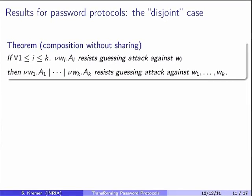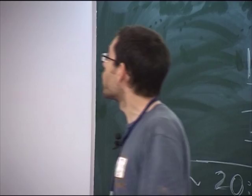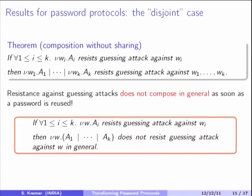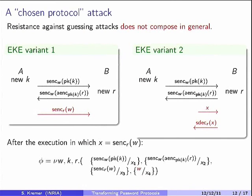If processes don't share anything and use different passwords wi for each protocol ai, then their parallel composition resists against guessing attacks — this is easy to show. However, if the same password w is used for each ai, this is no longer the case. Even if each protocol individually resists against guessing attacks on w, their composition with the same password w does not resist against guessing attacks, and there is a straightforward construction showing this.